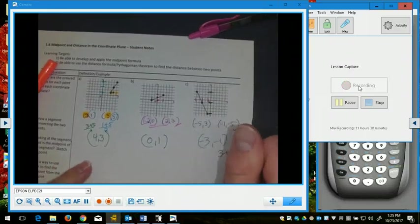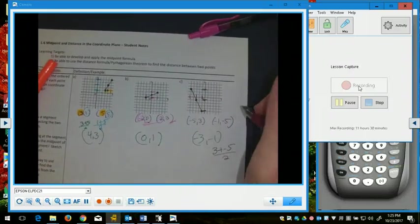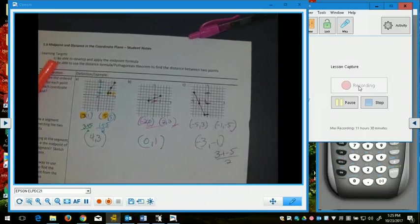Or, 3 plus negative 5, which is negative 2, take half, negative 1.